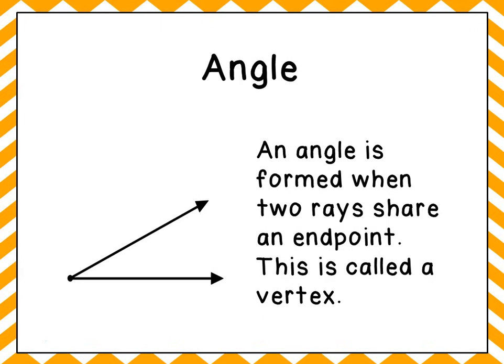The last word we want to take a look at is an angle. An angle is formed when two rays share an end point. When the rays are sharing an end point, that's called a vertex.